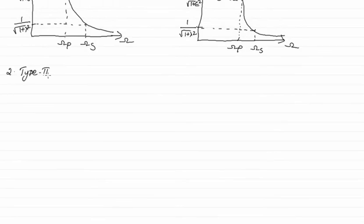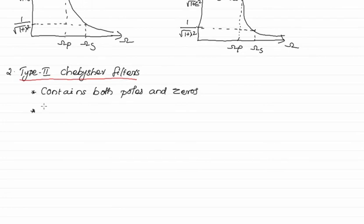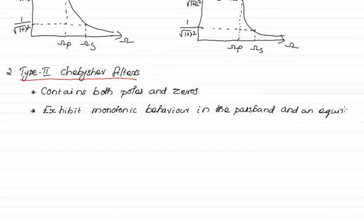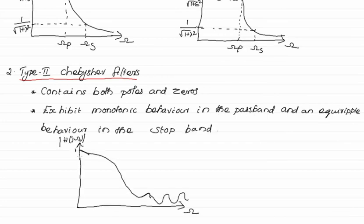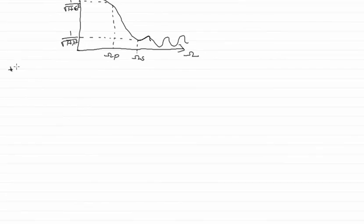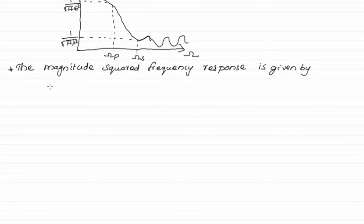Type-2 Chebyshev filters contain both poles and zeros. They exhibit monotonic behavior in the passband and equiripple behavior in the stopband. The graph shows this monotonic passband and equiripple stopband behavior, and the magnitude-squared frequency response of the Type-2 Chebyshev filter is defined accordingly.